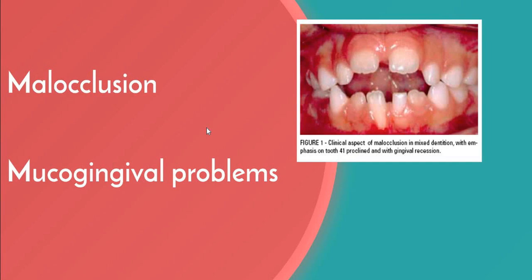In the mixed dentition, recession is most often found on the facial aspect of mandibular permanent incisors, as seen here, secondary to rotation or labial positioning related to space problems. Although erupting permanent lower incisors often show minimal attached gingiva, gingival width often increases as the teeth erupt and stimulate bone development. So don't worry if you have a few millimeters of attached gingiva, as it will increase during the aging process.